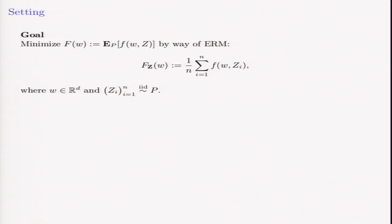We're interested in minimizing a non-convex objective function in expectation, say the population risk, and we do this by using IID samples where the noise, the Z_i's, come from some unknown distribution.